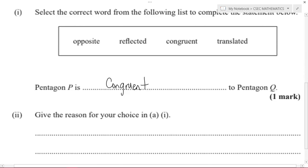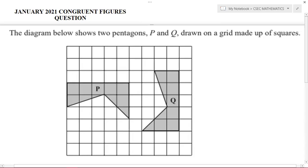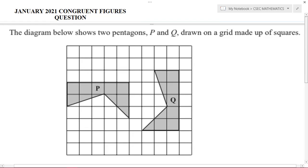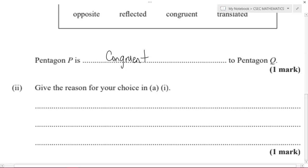And they ask us to give a reason. Now why did I say that Pentagon P is congruent to Pentagon Q? Well, if you look carefully at both diagrams there you can clearly see that both of the pentagons have the same shape. They are pentagons so they have the same shape and they are also of the same size. So you recognize that the size and the shape of these figures are the same, right? And that is what makes it congruent.